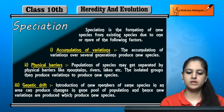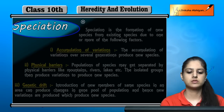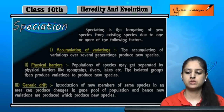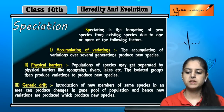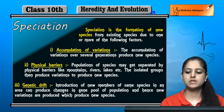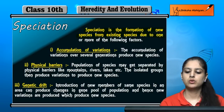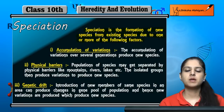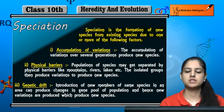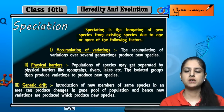The next topic is speciation. Speciation is the formation of new species from existing species due to one or more factors. When new species are formed from previous species, we call it speciation.